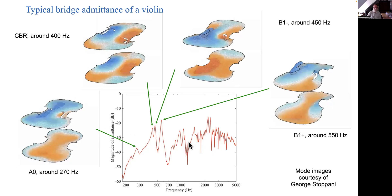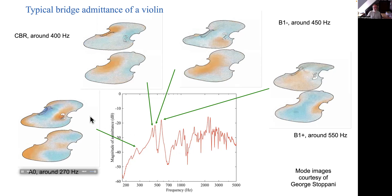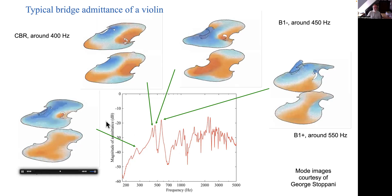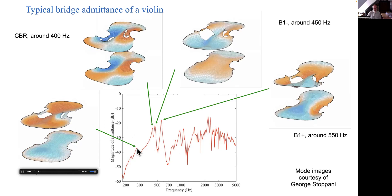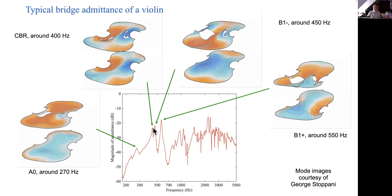They're not actually the same one as this admittance measurement but all violins have modes that look rather like these. And these do indeed correspond to individual peaks at low frequency.